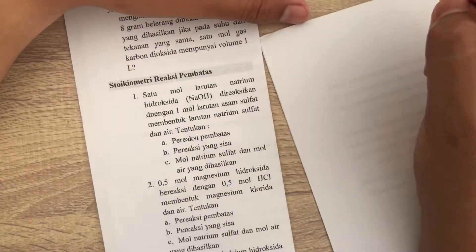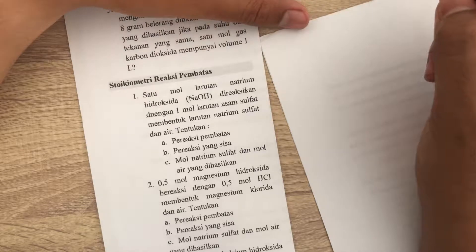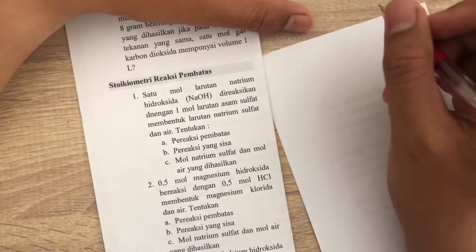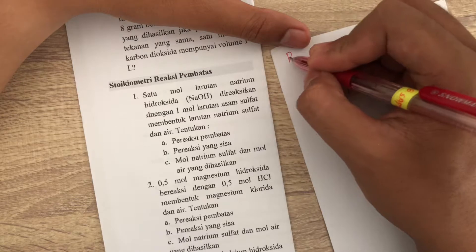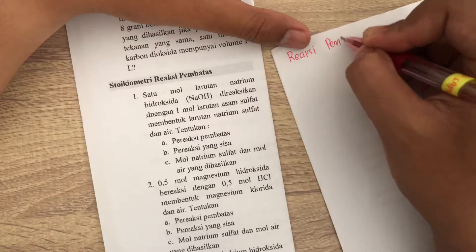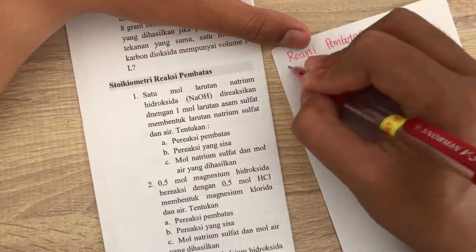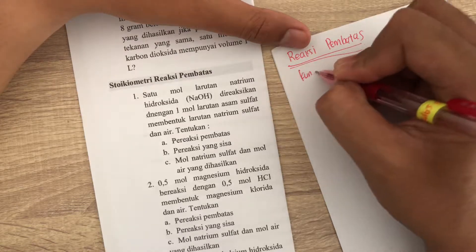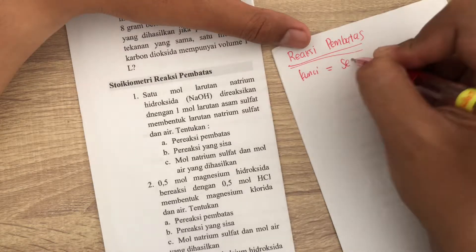Oke, untuk bab ini kita akan membahas stoikiometri, tapi untuk sub-babnya itu reaksi pembatas. Ini nanti ada reaksi pembatas, jadi kita dasarnya itu harus bisa menyetarakan reaksi. Kuncinya adalah, kuncinya terlebih dahulu, setarakan reaksinya.